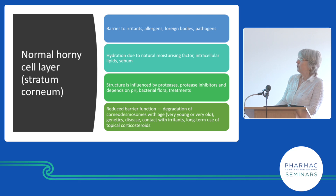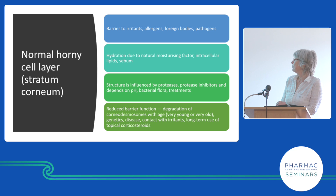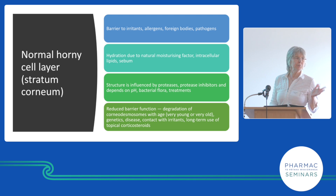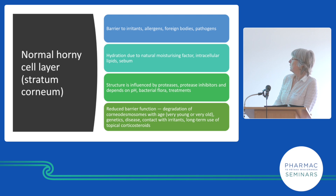The structure isn't always normal because various influences might make it abnormal — like an injury or a genetic defect. A protease is an enzyme that eats proteins; if you've got too many proteases you're eating your skin away and it may not be very effective. Protease inhibitors are proteins that stop that happening. We've always got a balance between proteases and protease inhibitors.